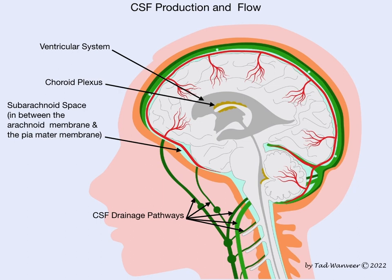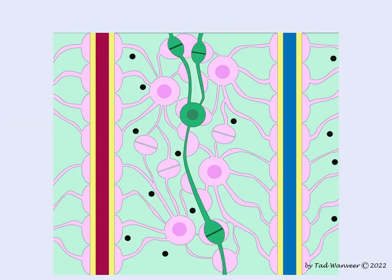This slide represents a detail of the brain tissue. The pink cells are astrocytes. The green cells represent neurons and synapses. The space around cells is known as the extracellular space, also known as the interstitial space, which is filled with interstitial fluid and extracellular matrix.